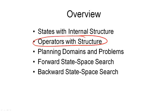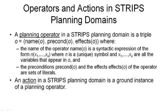Remember that actions are what give us the state transitions in our state transition system. For states, I started with some examples and informal definitions, followed by the formal definition of what a STRIPS representation state is. For operators, I'll do it the other way around — I will start with the formal definition of what a STRIPS operator is.